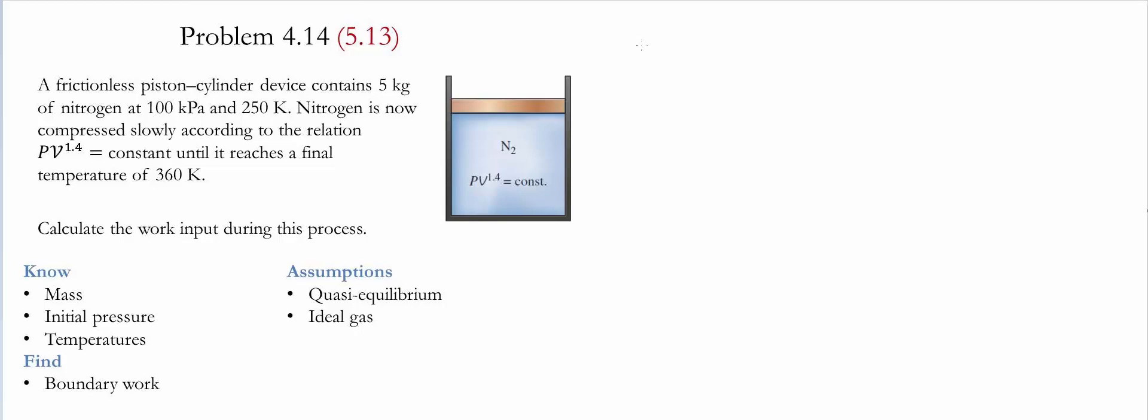The equation for calculating the boundary work for a polytropic process is given as the integral from 1 to 2 of pressure as a function of specific volume. This equals P2V2 minus P1V1 divided by 1 minus n, and in this case the value of n is equal to 1.4.